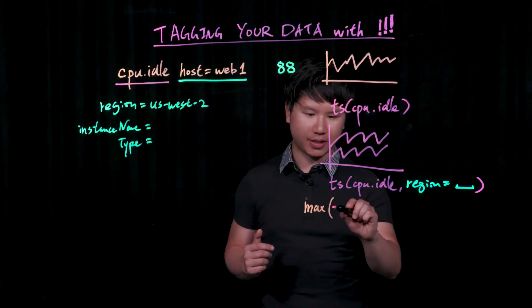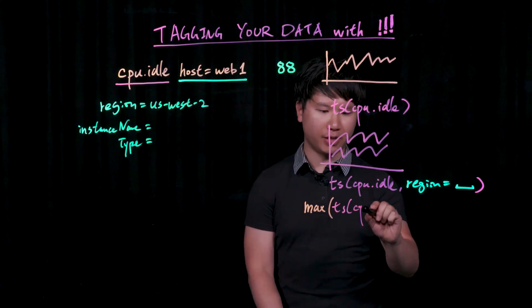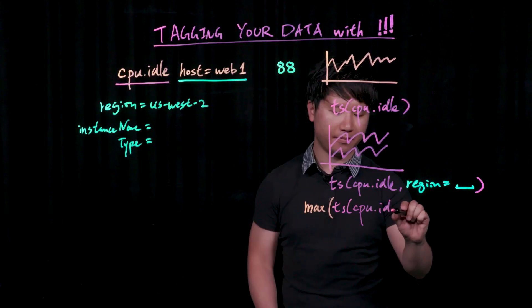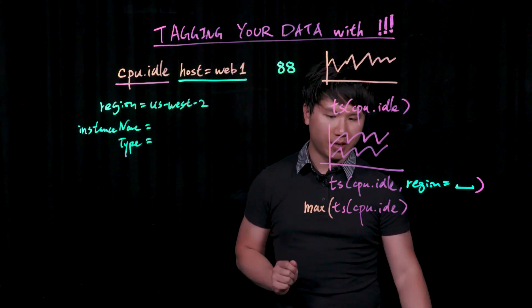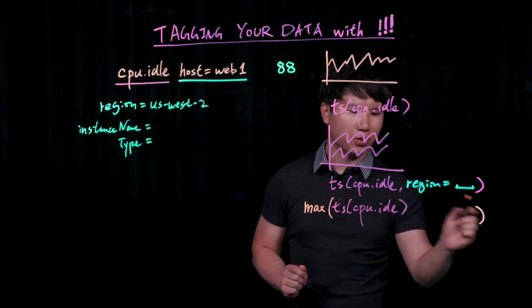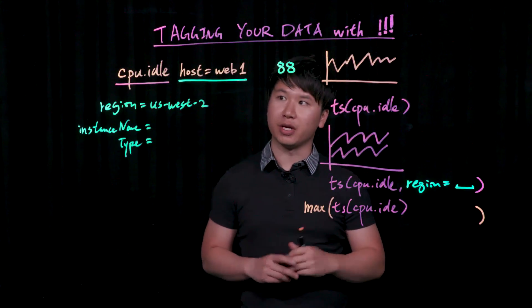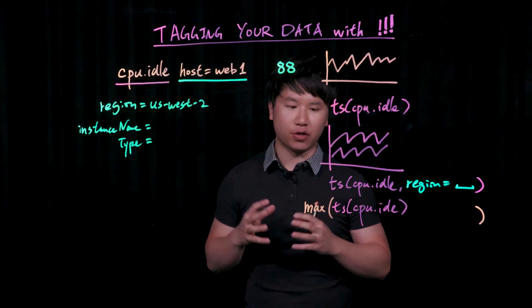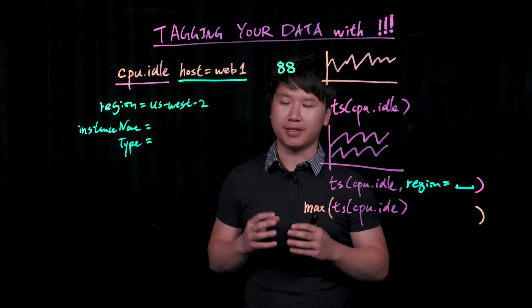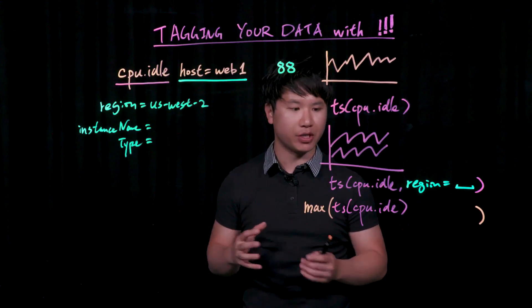And just say max time series CPU idle, and you have to give a dimension. If you do not give a dimension, for example, if I simply just close this query right here, and then you hit enter, what you would do is collapse all my time series across all regions, and just give me a single time series that reflects the max across that population.